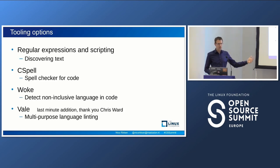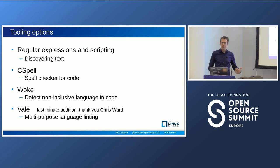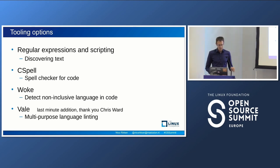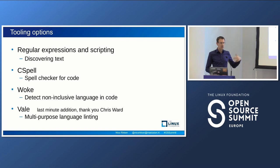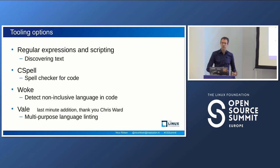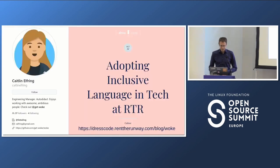Looking for tooling, I first thought maybe I could write something myself using regular expressions — how hard can it be — or maybe repurpose spell checkers like cspell. Finally I found woke, which is a dedicated tool for this purpose. Thanks to Chris, who reached out to me yesterday, I also became aware of Vale, which can do much more like checking grammar, spelling, and non-inclusive language.